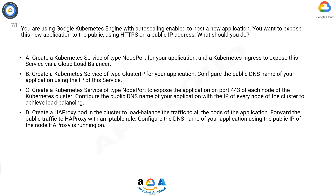C: Create a Kubernetes service of type NodePort to expose the application on port 443 of each node of the Kubernetes cluster. Configure the public DNS name of your application with the IP of every node of the cluster to achieve load balancing.